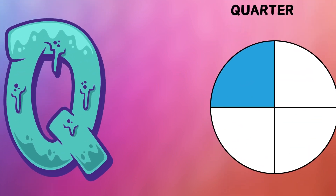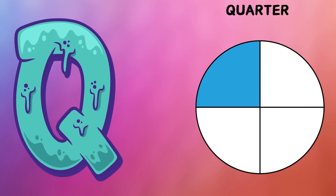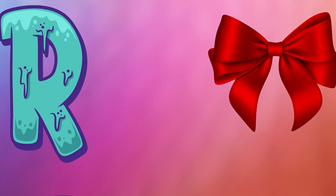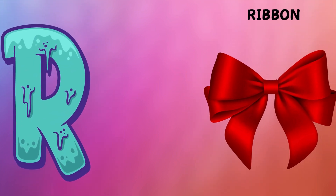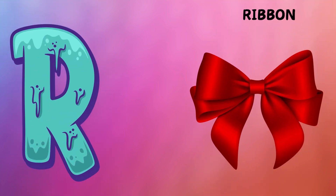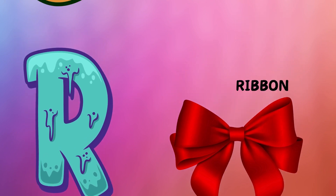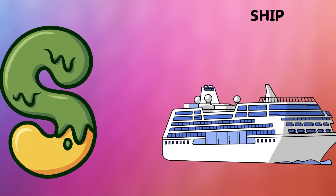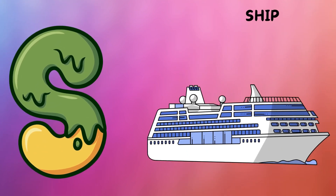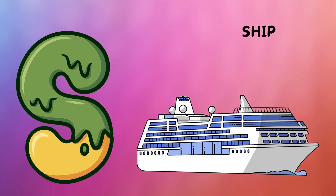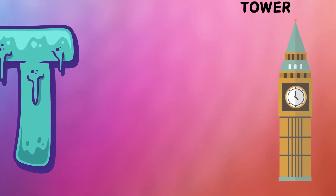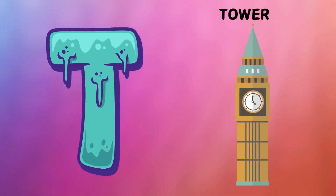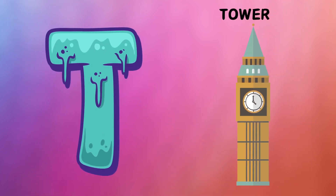Q is for quarter, k-k-quarter. R is for ribbon, r-r-ribbon. S is for ship, s-s-ship. T is for tower, t-t-tower.